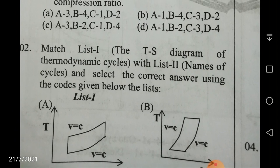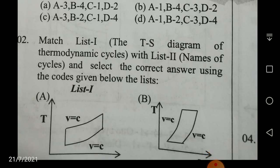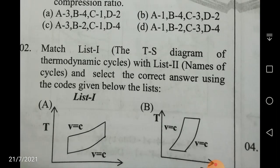Next, match list 1 — the TS diagram. Here, a TS diagram is given and you are asked to match the names of the cycles in list 2. So list 1 is the TS diagram and list 2 is the names of the cycles.